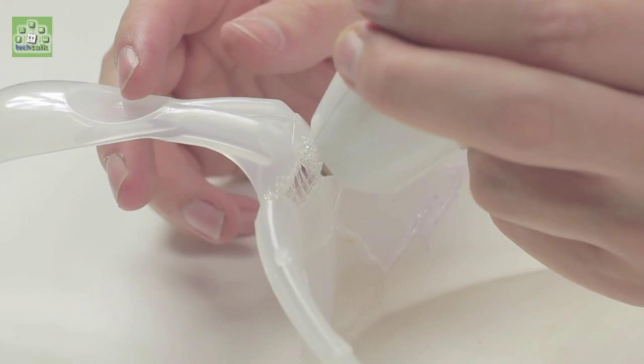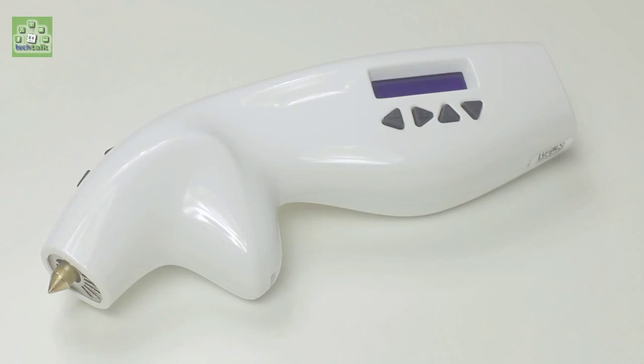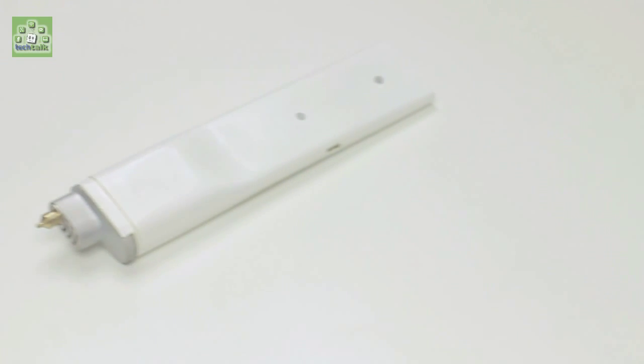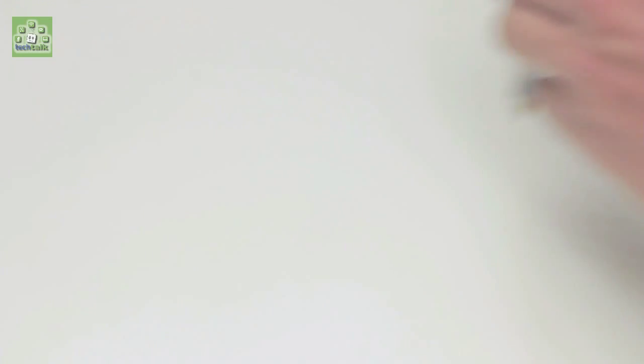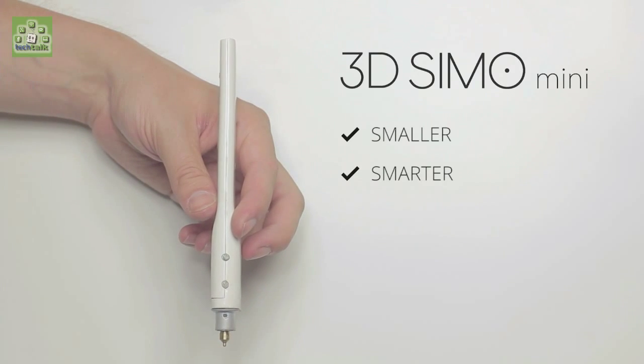But that wasn't enough for us. We've created a tool that would allow you to create anything you wish. The 3DSimo Mini is a smaller and smarter version of the original 3DSimo. It can also solder, burn, and cut things, and you can operate it manually or through your smartphone.